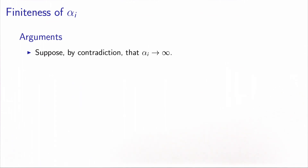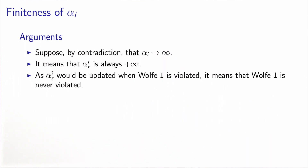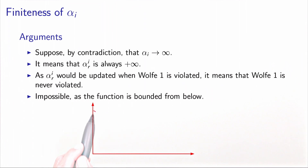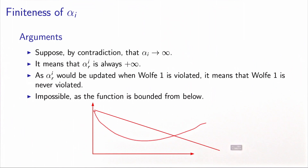The first thing we want to prove is that αi is finite. Suppose by contradiction that αi goes to infinity — it means the upper bound αR is always plus infinity, which means Wolf1 is never violated. This is impossible because we have assumed the function is bounded from below. If the function is bounded from below, the Wolf1 condition will at some point cross the function, so there exists a maximum finite step length that violates Wolf1. Therefore αR will be updated to a finite number, guaranteeing all subsequent αi will be finite.